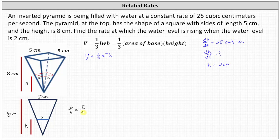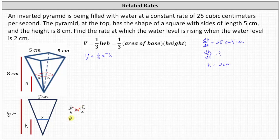Because we have similar triangles, we can set up a proportion using corresponding dimensions. We can say that eight is to h as five is to x. We can cross multiply to get eight x equals five h, and dividing both sides by eight gives us x equals five eighths times h.